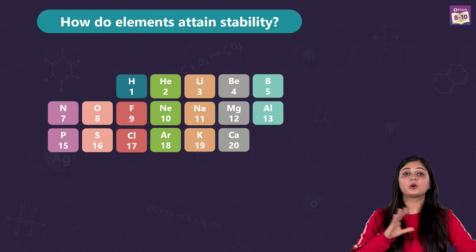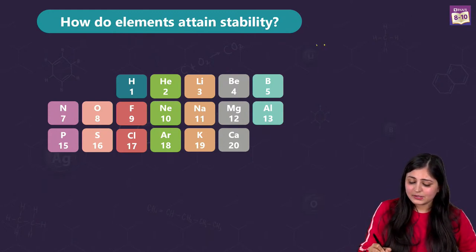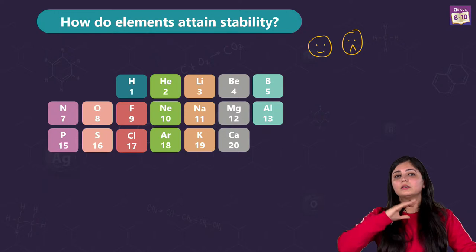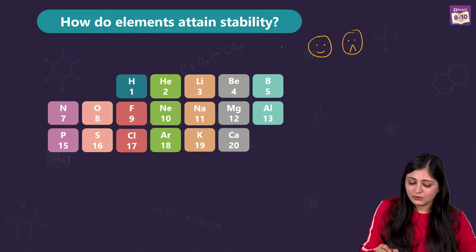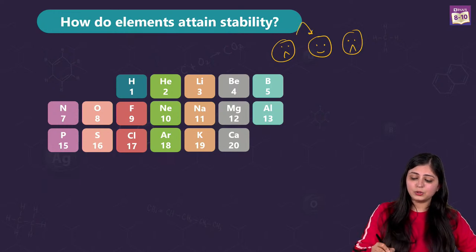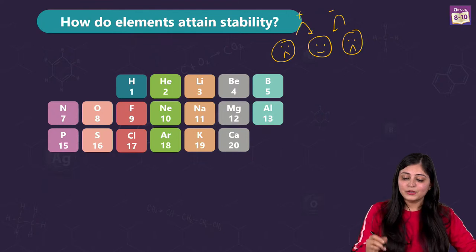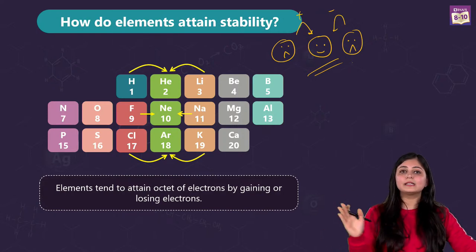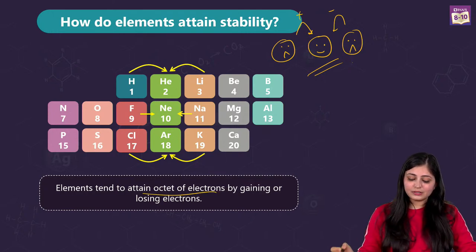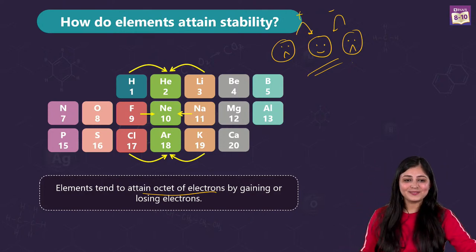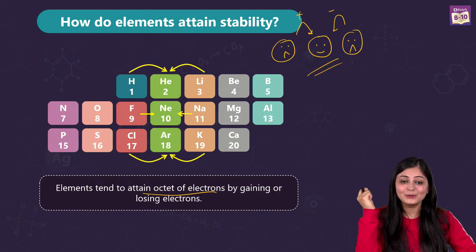How do elements actually attain stability? Suppose you're having your favourite dish but you've overeaten — you'd want to go for a walk to digest. Or if you didn't get enough, you'd want to eat more. Either way you're ultimately trying to be happy. That's what elements also want — to be stable. Maybe by losing, gaining, or sharing electrons to attain octet and the noble gas configuration.